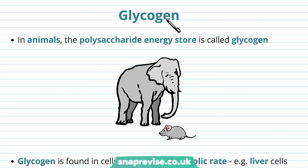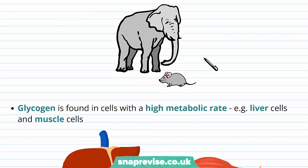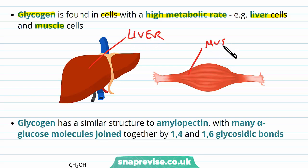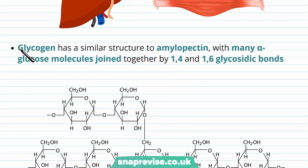A final very important polysaccharide used for energy storage is found in animals. In animals, the main polysaccharide energy store is glycogen — this isn't really found in plants. Glycogen is mainly found in cells with a high metabolic rate, those that have a high demand for energy, for example cells of the liver, which are busy doing detoxification, and muscle cells. Glycogen is actually a very similar molecule in structure to amylopectin, with many alpha glucose molecules joined by 1,4 and 1,6 glycosidic bonds.